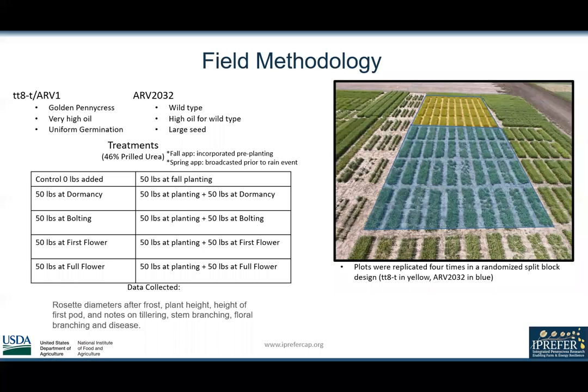Going into the field methodology of the experiment, two varieties were selected. TT8-T is a gene-edited golden Pennycress line with a background in ARV1 with very high oil content and uniform germination. ARV2032 is a wild-type parent line with high oil for a wild-type and very large seed.